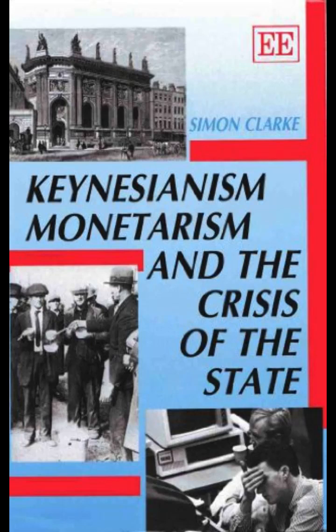Chapter 10: Post-War Reconstruction and the Keynesian Welfare State. Wartime Planning and the Budget. The policy of the British government in the Second World War drew on the lessons of the first. There was an immediate realization that the demands of war could impose severe economic and political pressures that could only be accommodated by establishing a rigorous system of controls and by enlisting the support of the working class for the war effort.